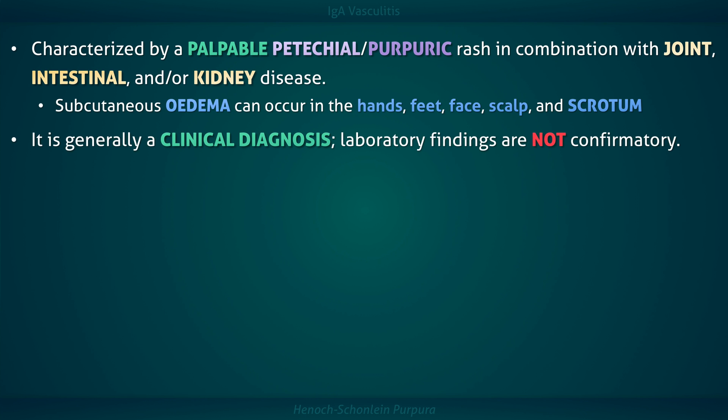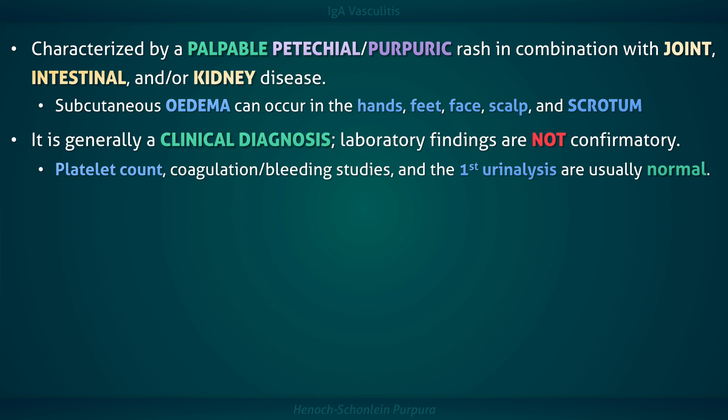The diagnosis can usually be made based on the history and physical examination. Laboratory findings are commonly abnormal but otherwise nonspecific. For example, inflammatory markers can be elevated due to an inciting infection, and anemia can occur due to gastrointestinal hemorrhage. The platelet count is typically normal or elevated, which helps rule out other conditions that can present similarly. Nephritis often is not manifest on presentation, and thus the initial urinalysis is commonly normal.